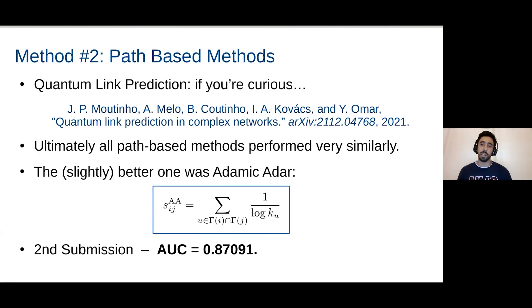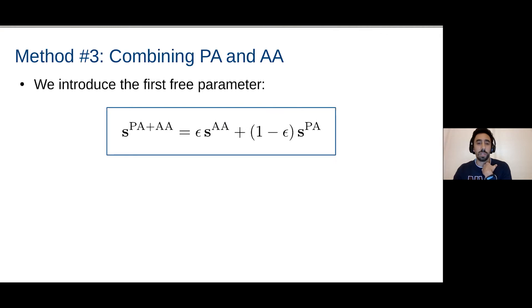But ultimately, what we found in this dataset was that all path-based methods performed very similarly. There was no big difference between paths of length two and paths of length three. So then we tested a couple of different ones, and the slightly better one was the Adamic-Adar index, which has also been mentioned before. This is just common neighbors with a degree normalization. And then we submitted this score to the competition, just without using the preferential attachment, just this score alone to get an intuition of how it would perform. We got a 0.870. This was not as good as the previous one, still quite nice.